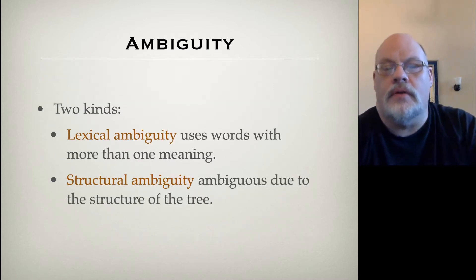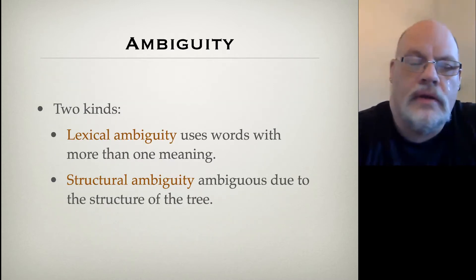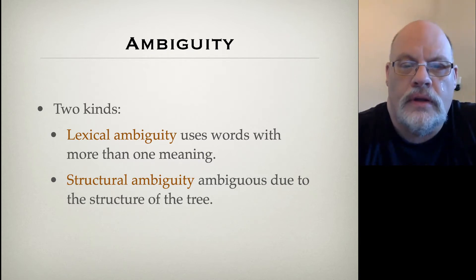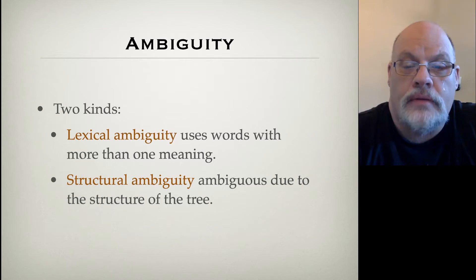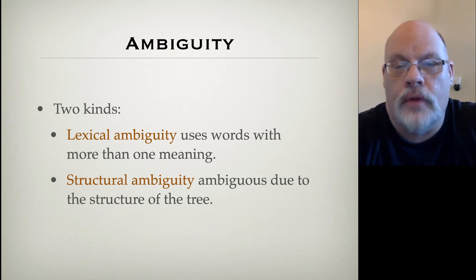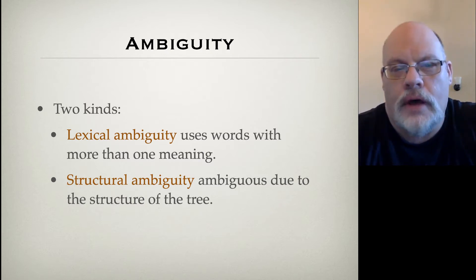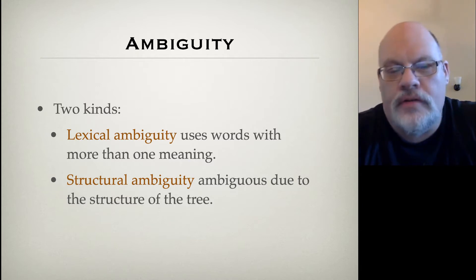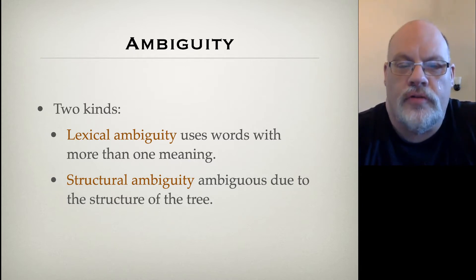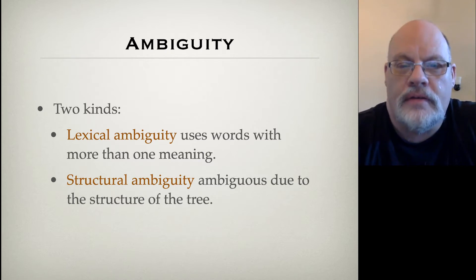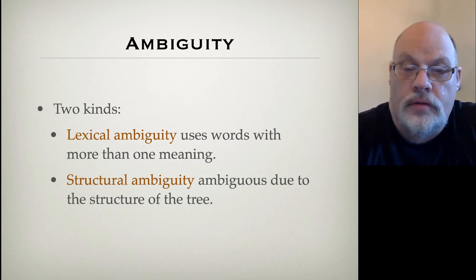There are two kinds of ambiguity. The kind we just saw — 'Juanita went to the bank' — is lexically ambiguous: it uses words with more than one meaning. 'Bank' can mean the side of a river or the place where you put your money. Much more interesting to syntacticians is structural ambiguity, where a sentence is ambiguous because the tree structure could be drawn two different ways.